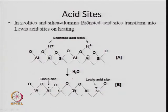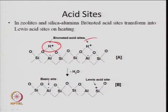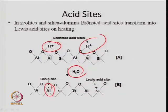Depending upon the silicon-to-aluminum ratio, a Brønsted type acid — because of the proton in the framework — when heated, water gets out and ultimately it is the aluminum-negative that provides the Lewis acidity in the zeolite.